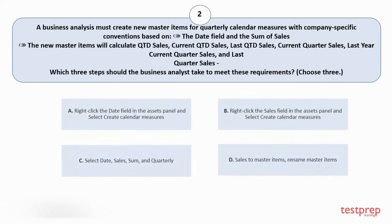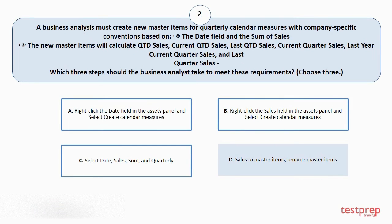Your options are: A. Right-click the date field in the assets panel and select create calendar measures. B. Right-click the sales field in the assets panel and select create calendar measures. C. Select date, sales, sum, and quarterly. D. Sales to master items, rename master items. The correct answers are option A, B, and C.